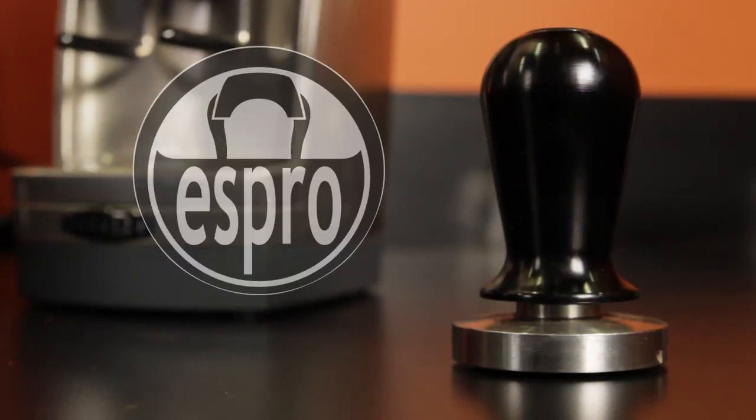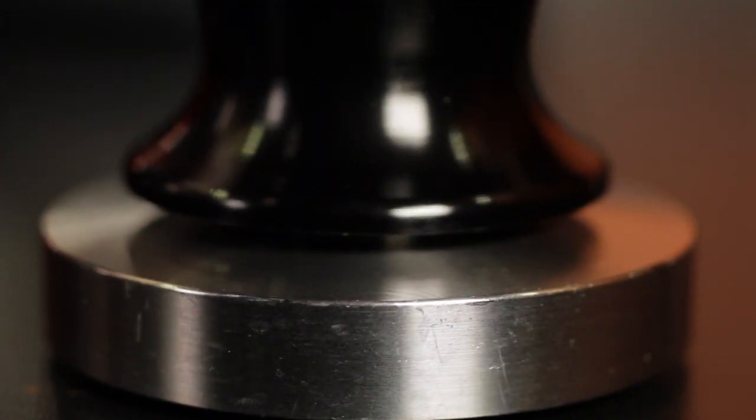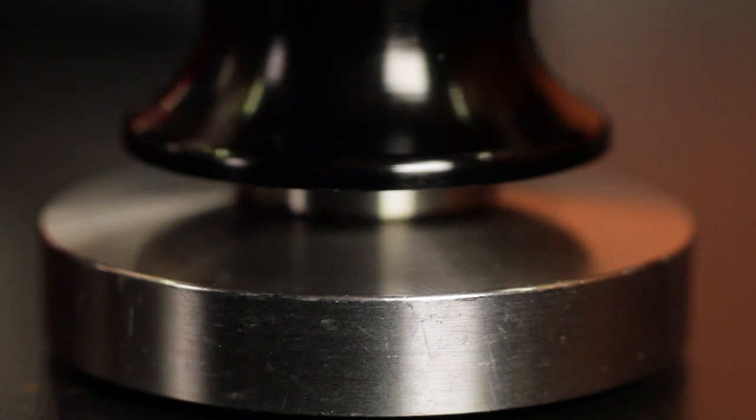If you're newer to espresso or looking for more consistency in your tamping pressure, consider an Espro Calibrated Tamper. It's won awards in the Best Training Tool category. This unique tamper automatically clicks when 30 pounds of force is applied. It comes in all standard sizes and in flat and convex bottom versions.